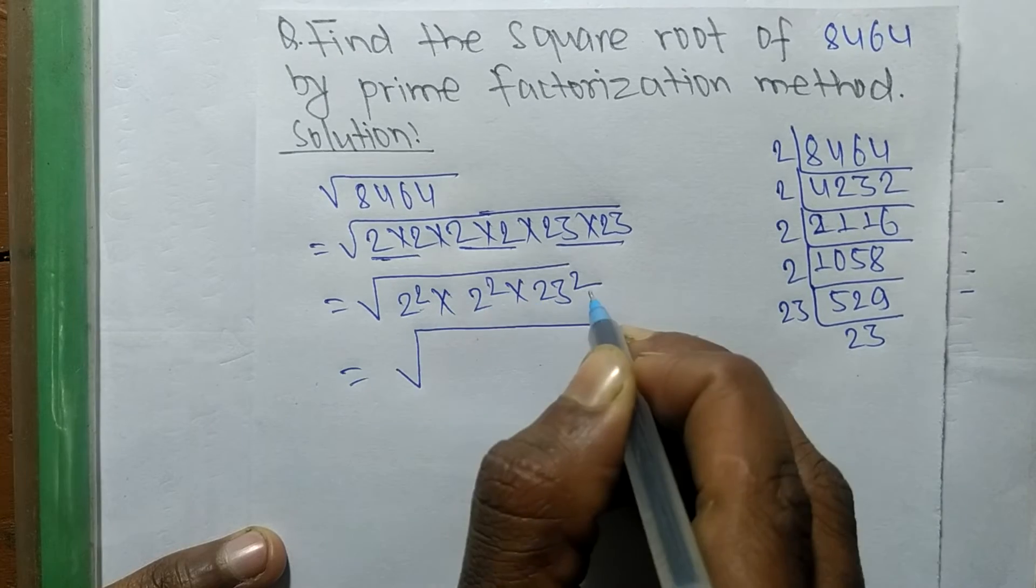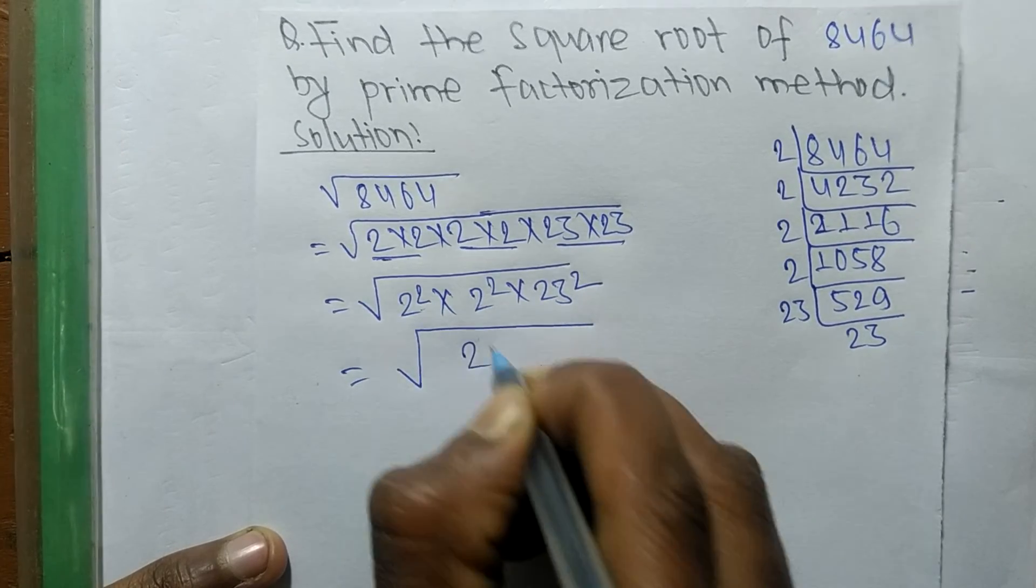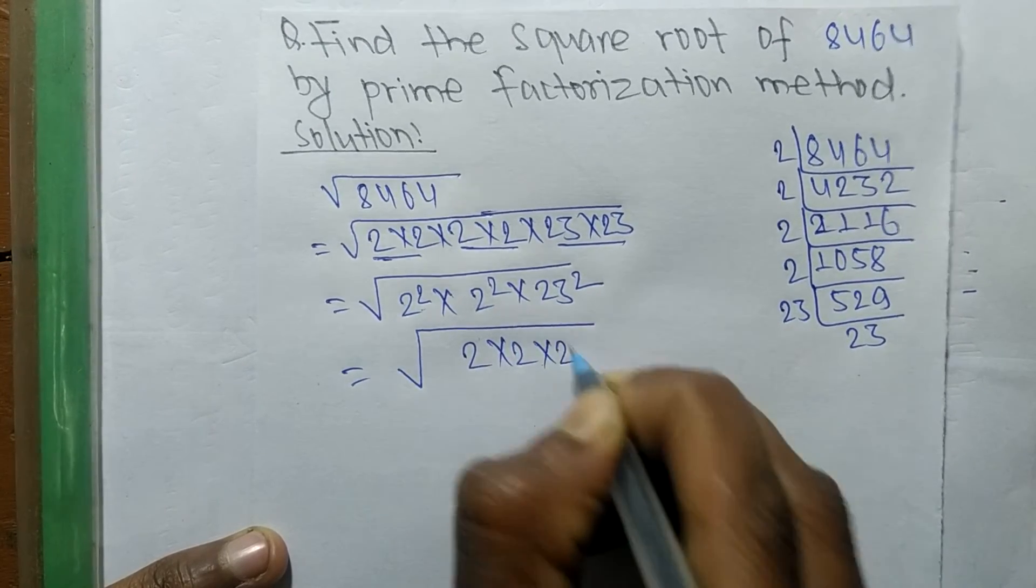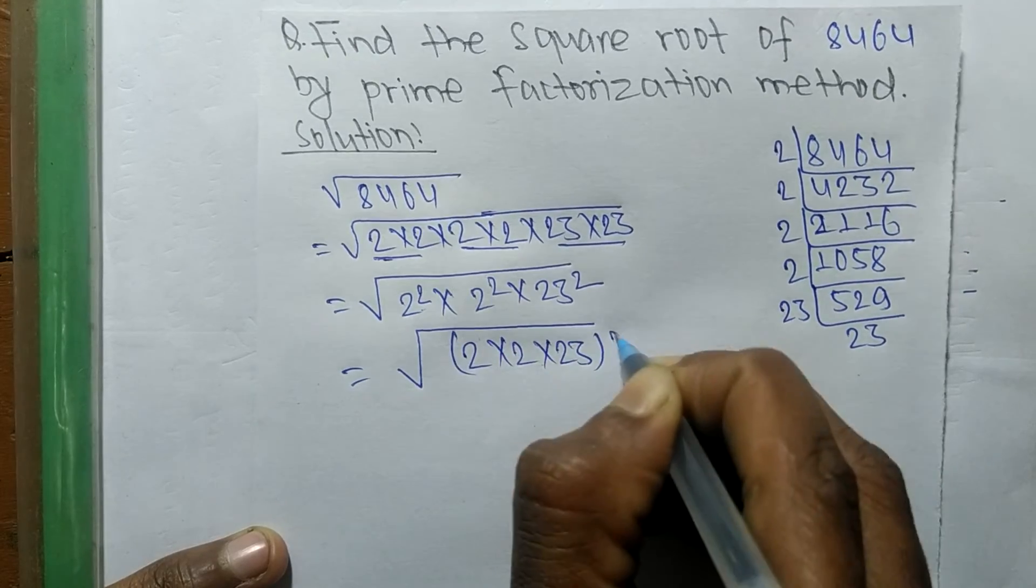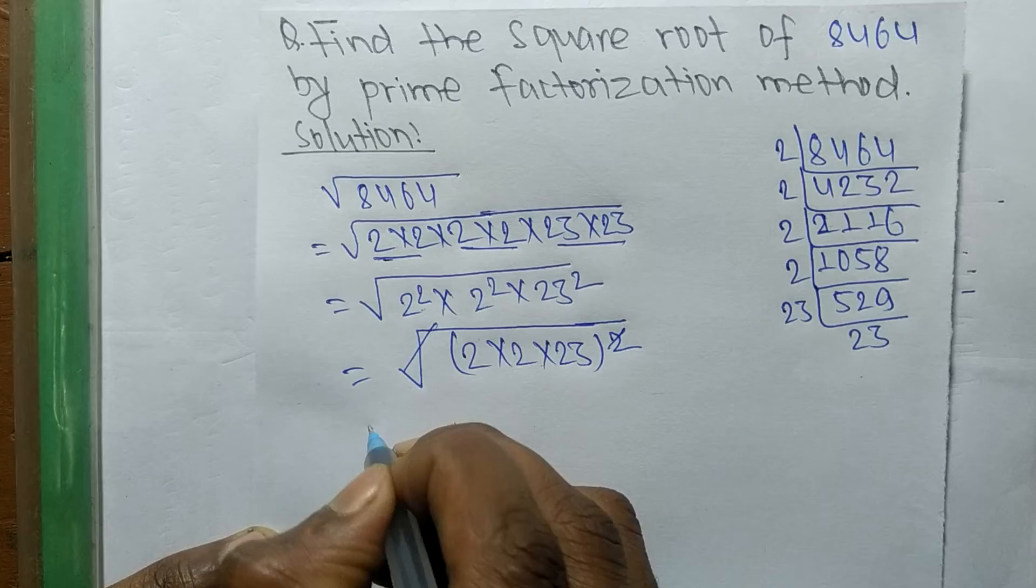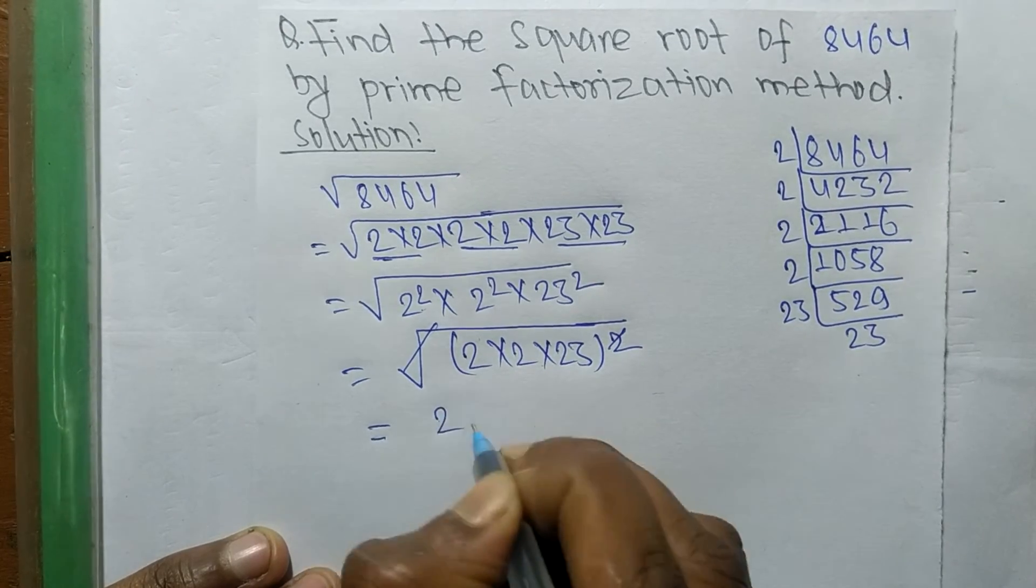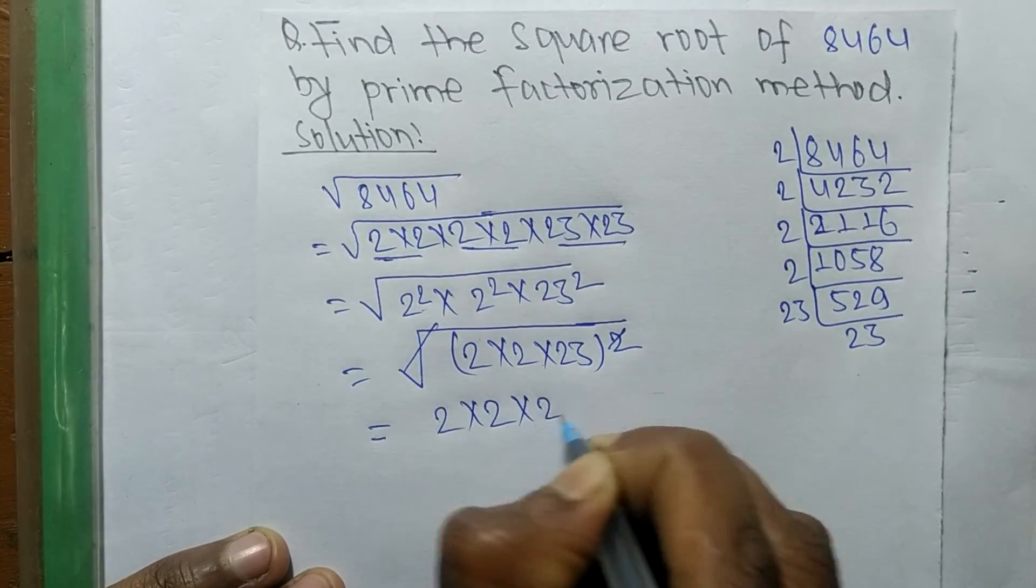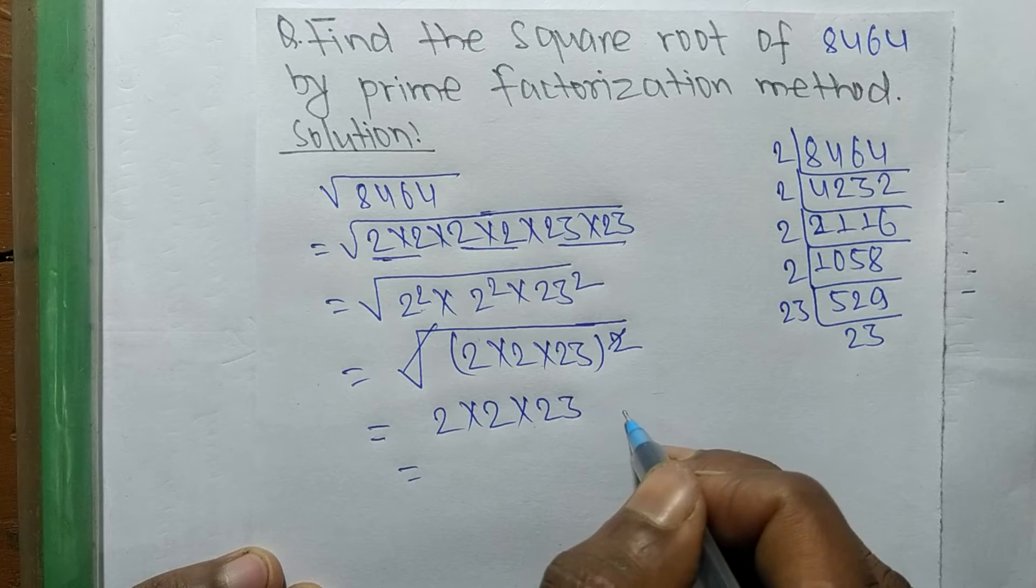Since the square is present in all, we can write it as (2 into 2 into 23) whole squared. The square and square root cancel each other, so the remaining numbers are 2 into 2 into 23.